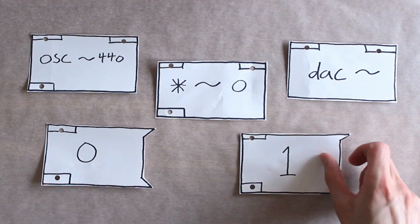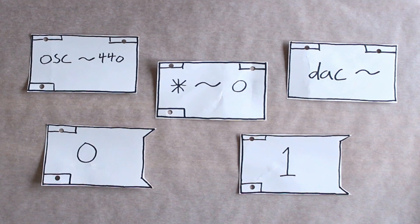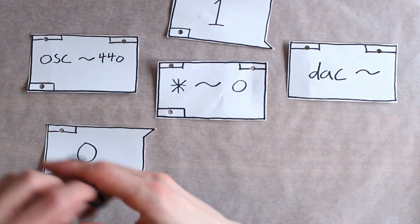Message boxes have an indentation on the right side, and they will pass along the data inside of them when they are clicked.